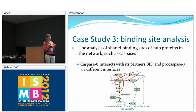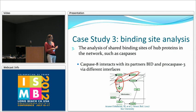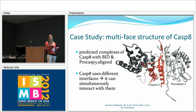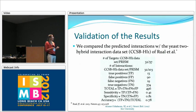In the last case study, we analyzed the binding sites of HUB proteins, particularly caspase-8, and checked how it interacts with two different partners: BID and pro-caspase-3. Caspase-8 and caspase-3 interaction leads to the extrinsic apoptosis pathway, while caspase-8 and BID interaction leads to the intrinsic apoptosis pathway. When we aligned the caspase-8/BID complex with the caspase-8/pro-caspase-3 complex, we observed that caspase-8 interacts with these two partners using different interfaces, so it can simultaneously interact with both.